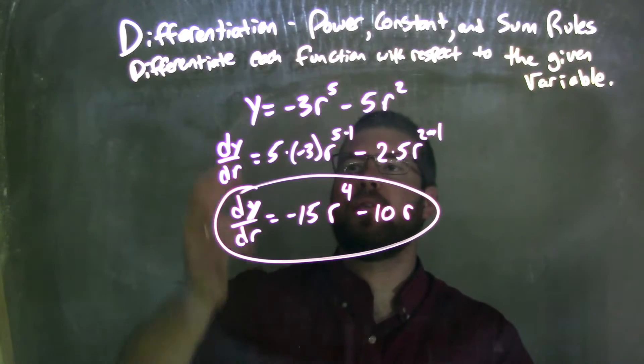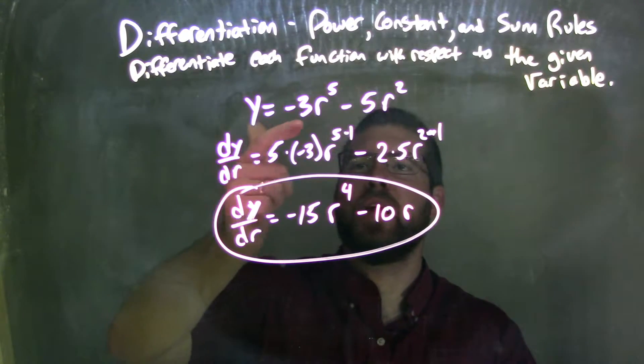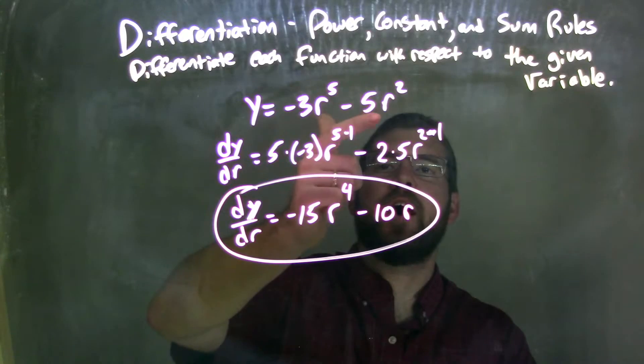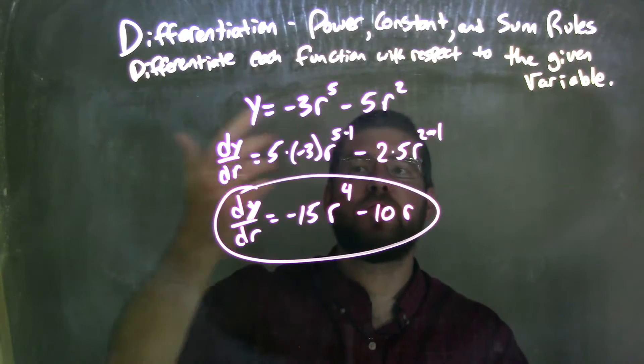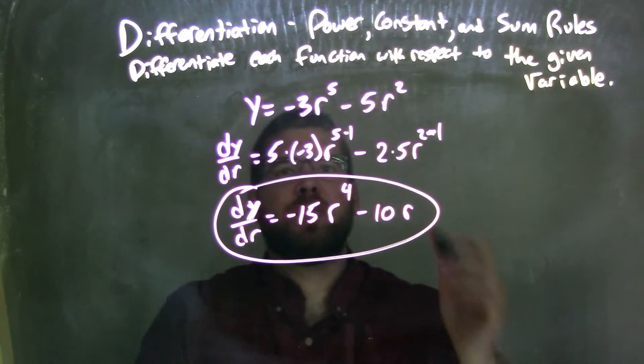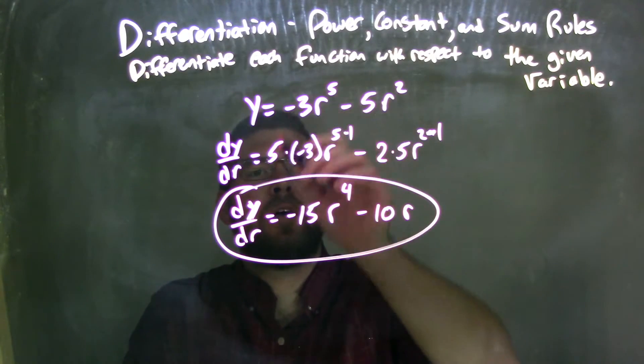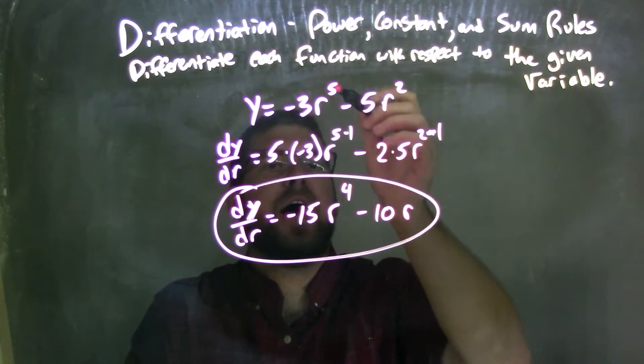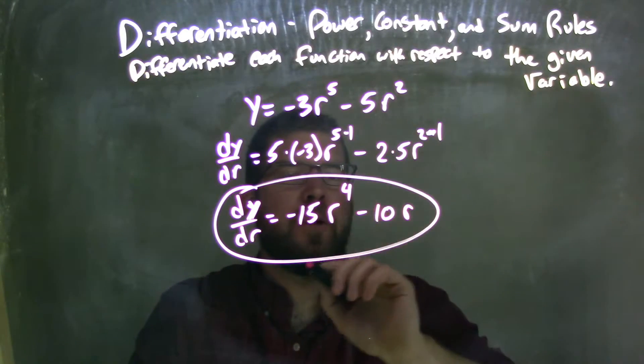So let's recap. We're given our function, y equals negative 3r to the 5th minus 5r squared, and we're deriving with respect to r. When I derive with respect to r, dy dr, I use my power rule. 5 comes out front. 5 times the negative 3r to the exponent 5 minus 1, which we subtract the exponent by 1 using the power rule.